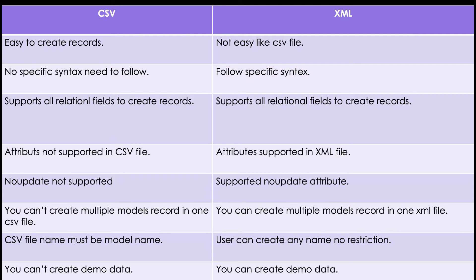If we look at the XML side, we need to follow XML standards: the parent tag, then child tags, and if a tag has sub-elements we must mention those too. We also need to use attributes. For example, when we created many records, views like kanban view, form view, tree view, calendar view, and menus, we had to mention them as a structure. That's the main difference between CSV and XML.